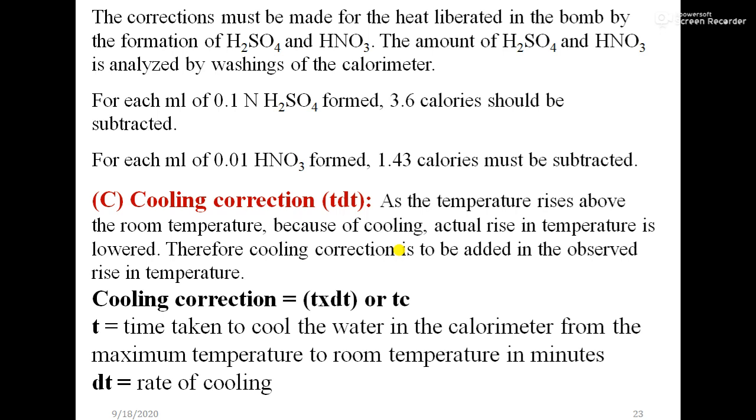For each ml of 0.1 normal H2SO4 formed, 3.6 calories should be subtracted. For each ml of 0.01 HNO3 formed, 1.4243 calories must be subtracted. This is acid correction. Then next is cooling correction.